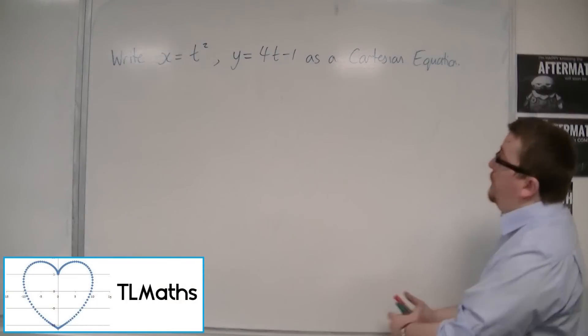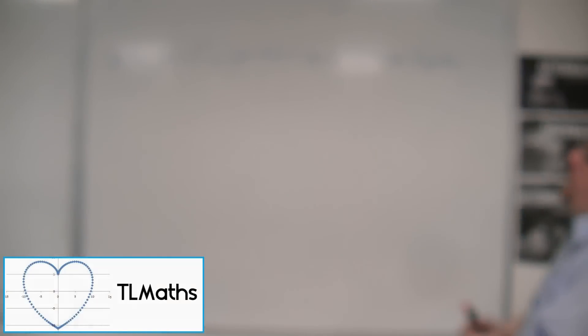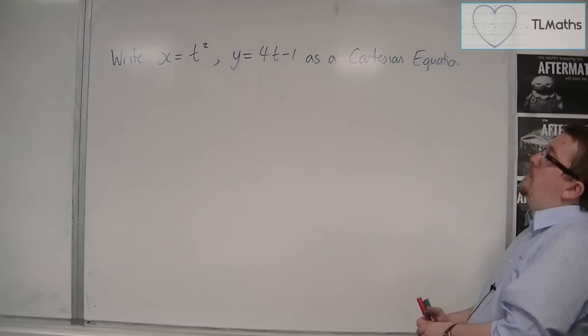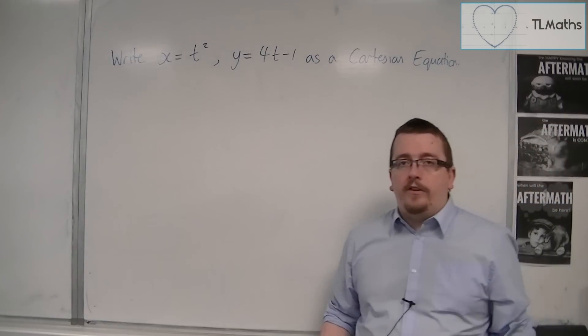So in this video, we are going to look at writing x equals t squared and y equals 4t minus 1 as a Cartesian equation.